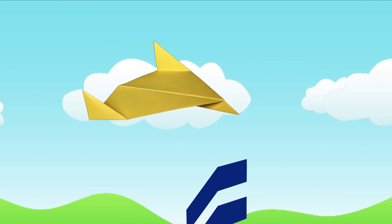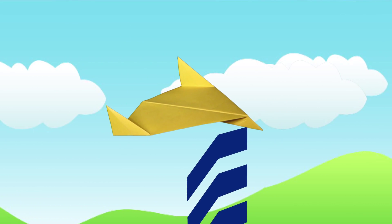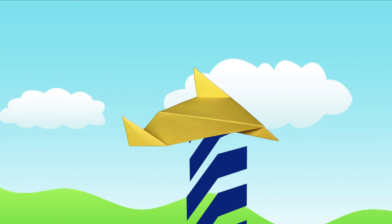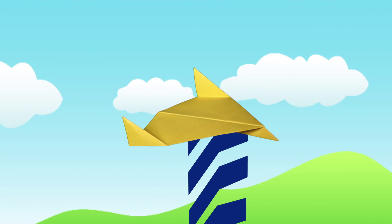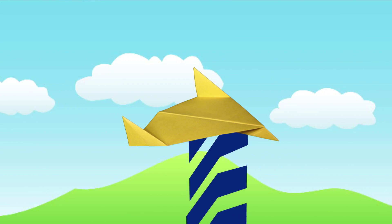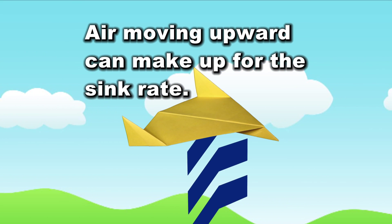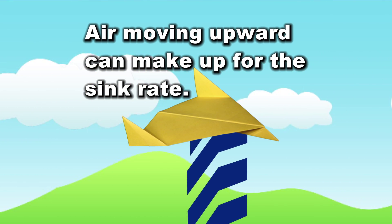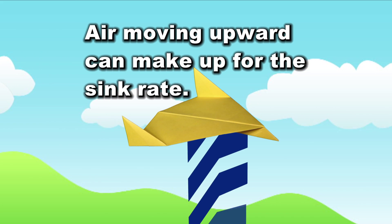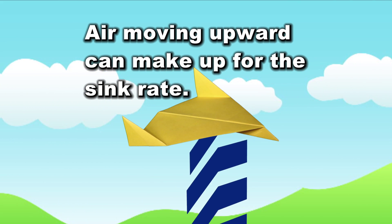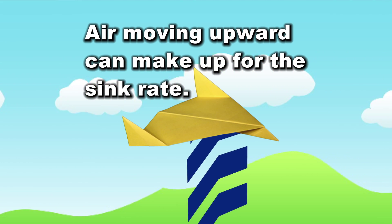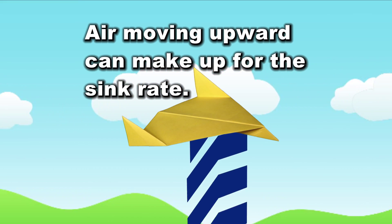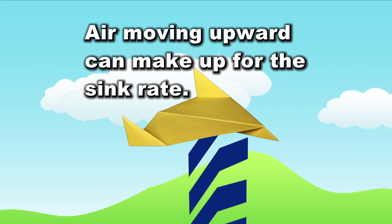What if a glider flies over air that's moving upward? The flat part of the wing gets pushed upward by the air. With enough upward push, the plane stops losing altitude — the updraft has made up for the sink rate. That's how hang gliders and buzzards stay in the air for hours; they find air moving upward and fly right there in that upward moving air.